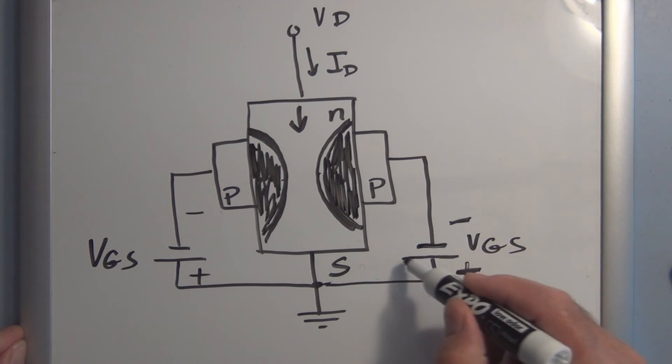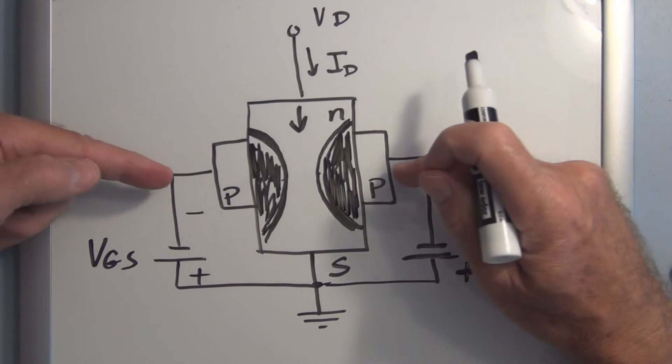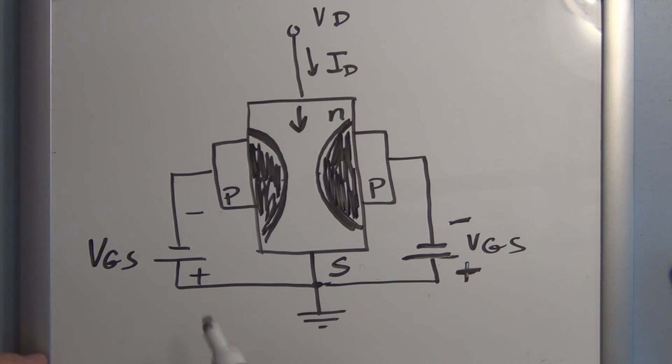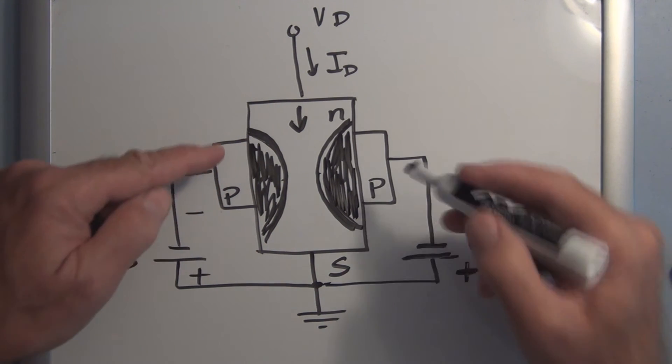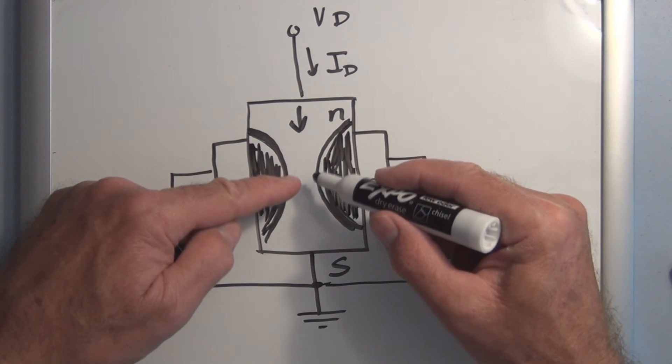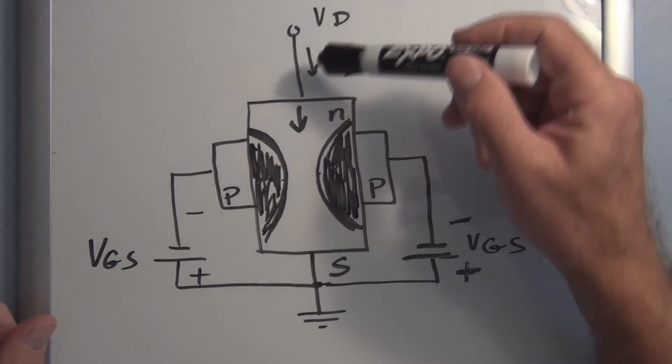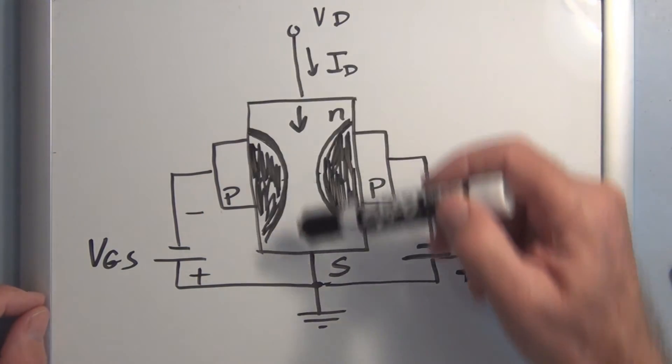And as you increase this negative voltage, this region starts to expand to a point where it's going to touch and combine and it blocks the ability of electrons to go from the drain to the source. These are tied together in actuality. It's not two separate batteries or two separate voltages. But as long as the voltage from gate to source is negative, this field starts to increase and starts to turn off the pathway of electrons to flow from the drain to the source.